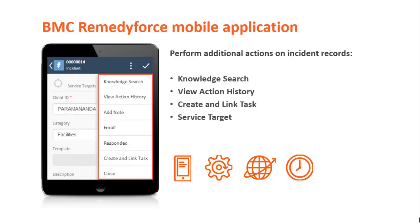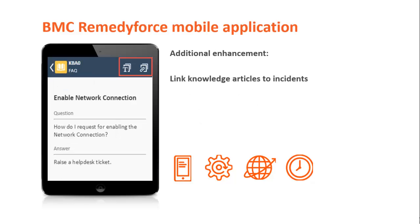From the BMC RemedyForce mobile application, you can now perform additional actions on incident records. You can perform knowledge search, view a record's action history, create and link a task to an incident, and view the service targets that are applied to an incident record. You can also search for knowledge articles and link them to incidents by copying the knowledge article text or knowledge article link to the resolution field of an incident record.